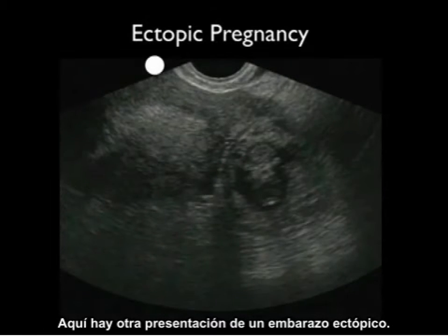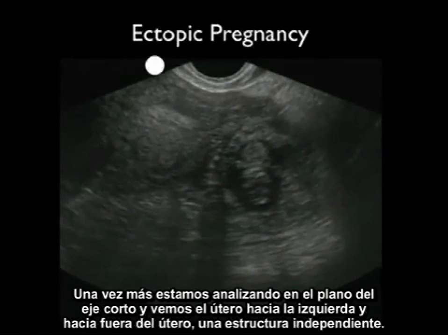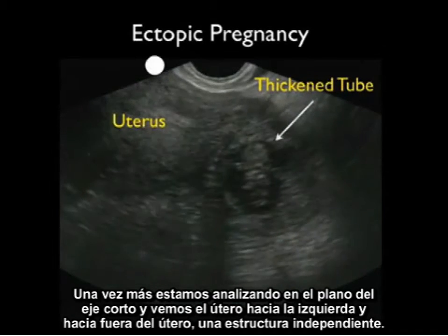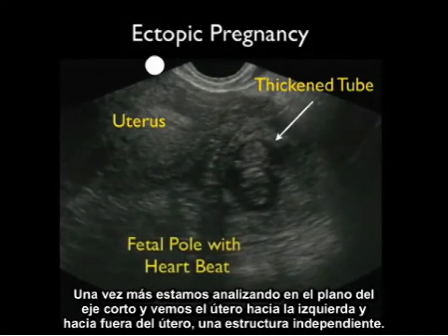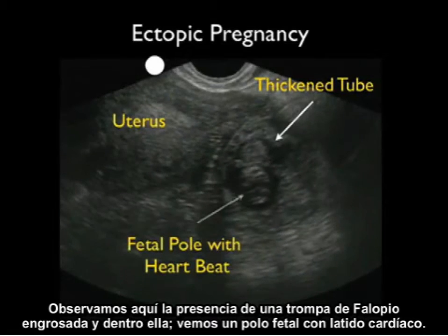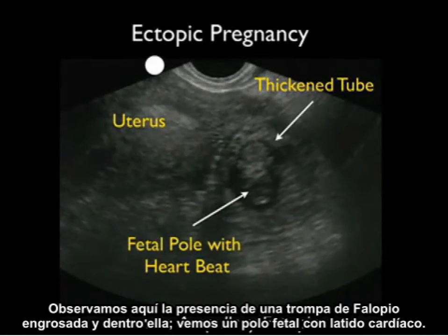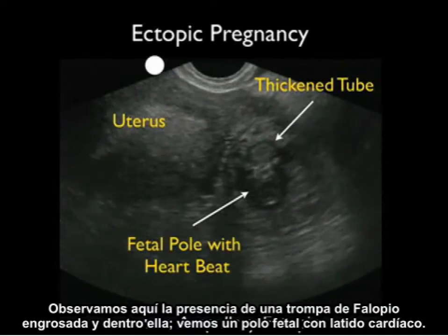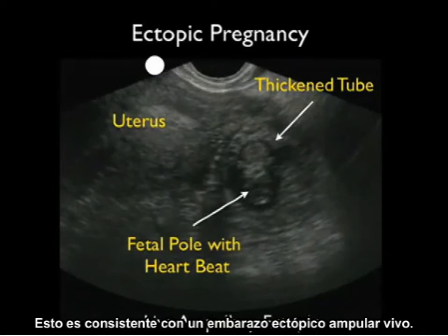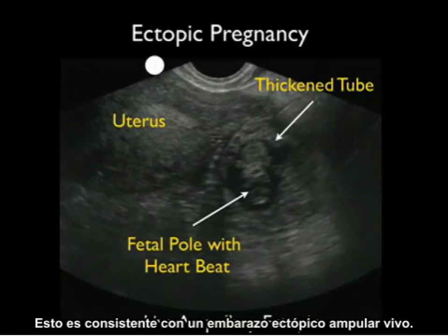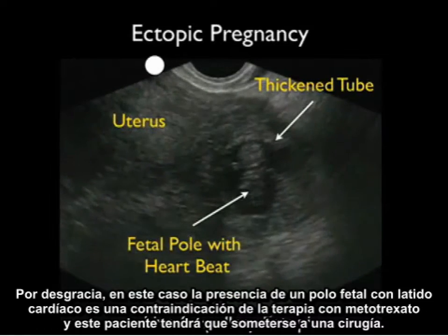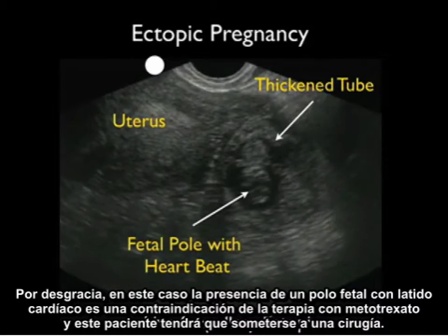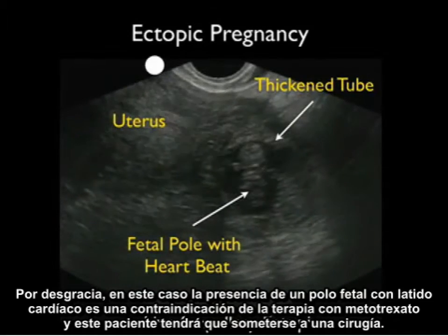Here's another presentation of an ectopic pregnancy. Scanning in a short axis plane, we see the uterus to the left and outside the uterus a separate structure. We note the presence of a thickened fallopian tube, and inside it we see a fetal pole with a heartbeat, consistent with a live ampullary ectopic pregnancy. Unfortunately in this case, the presence of a fetal pole with a heartbeat is a contraindication to methotrexate therapy and this patient will need to undergo surgery.